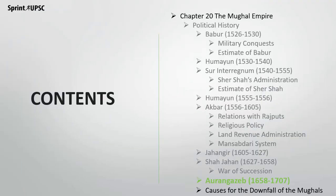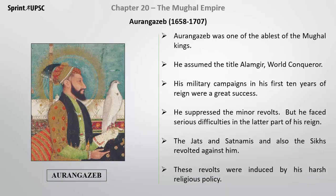We have now understood a lot of political history. We have covered the last ruler from 1658 to 1707. We saw how the brothers took the war of succession and imprisoned their father. Now we will understand the causes of the downfall of the Mughal Empire, starting with Aurangzeb.